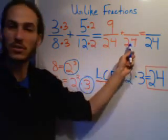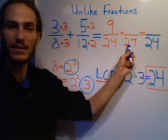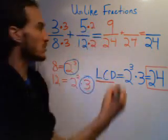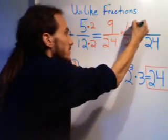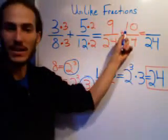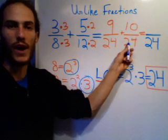12 times 2 indeed gives us 24 in the second denominator here, and 5 times 2 gives us 10 in the second numerator of our new equivalent fraction.